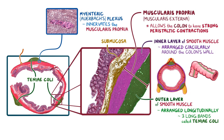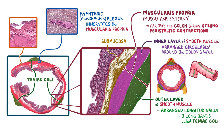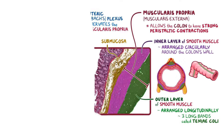Some portions of the colon will have an additional thin layer of connective tissue that surrounds the muscularis propria, called the serosa.